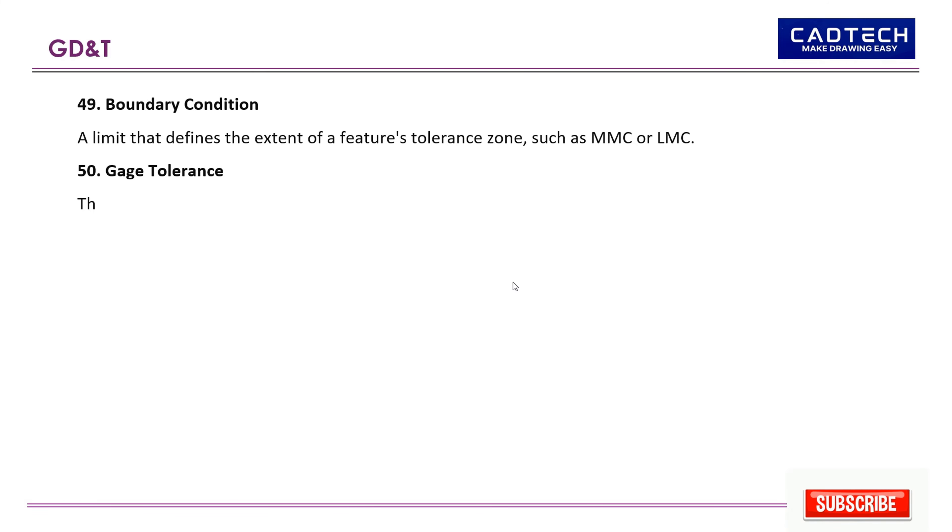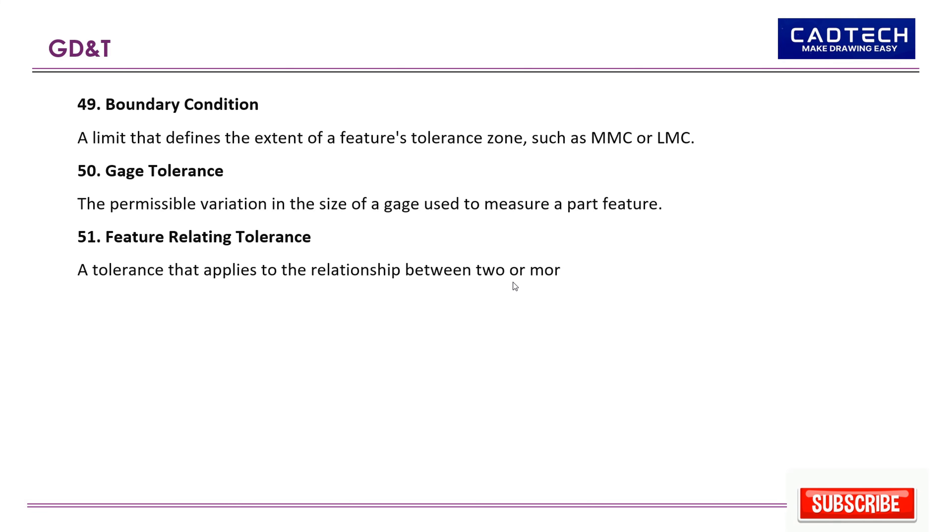50. Gauge tolerance: The permissible variation in the size of a gauge used to measure a part feature. 51. Feature relating tolerance: A tolerance that applies to the relationship between two or more features.